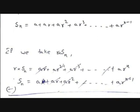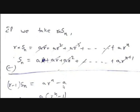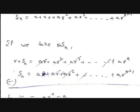If we multiply Sn by r, we get r·Sn = a·r + a·r² + a·r³ + ... + a·r^n. Now if we subtract Sn from r·Sn, most terms cancel: a·r cancels, a·r² cancels, and so on up to a·r^(n−1). We are left with r·Sn − Sn = a·r^n − a.